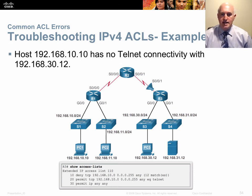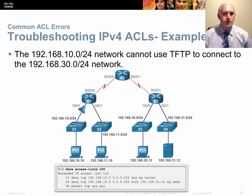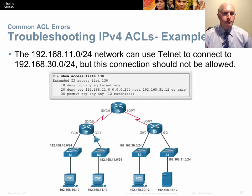In 'show access-list', notice the number of matches — it tells you how many packets matched each statement. This is really handy for troubleshooting. If traffic isn't getting through, use 'show access-list' to see how many matches occurred. For example, if statement 10 in list 110 matched 12 times but nothing was permitted, you can verify the deny is working and then test traffic that should match the permit statement.